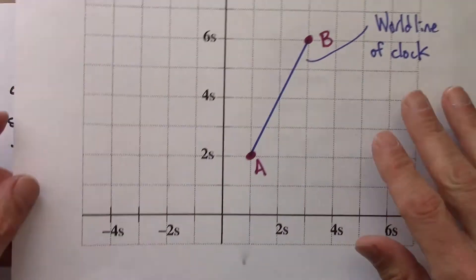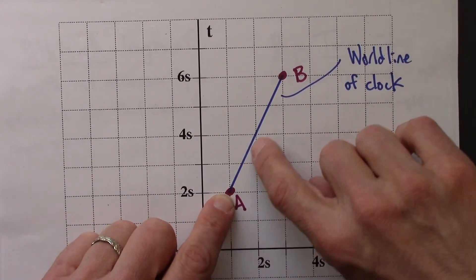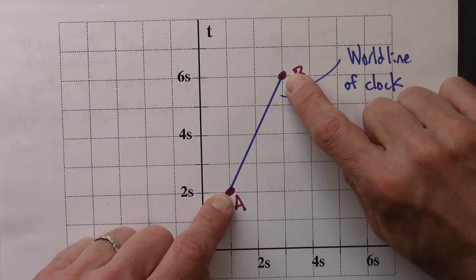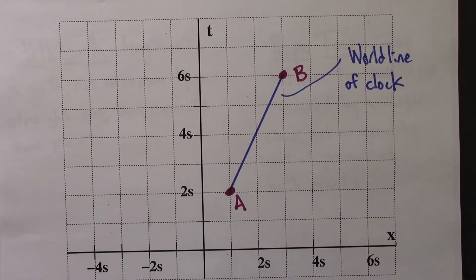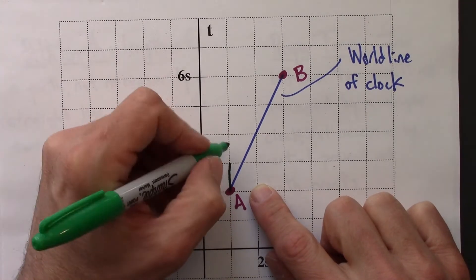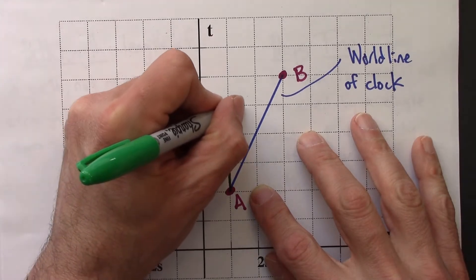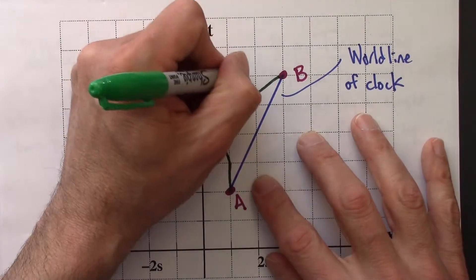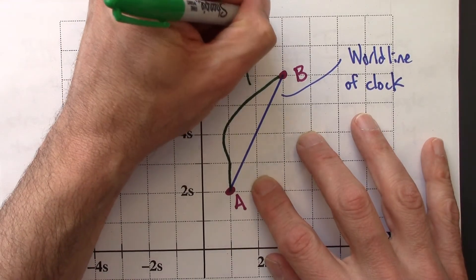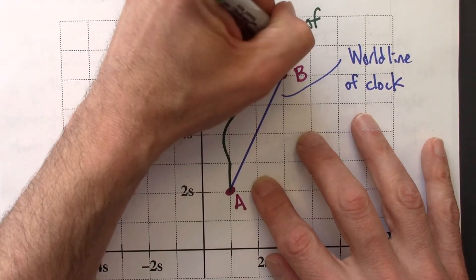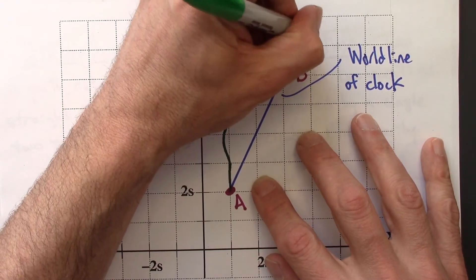What about in space-time? Alright, so this would be the world line of an inertial clock, moving at a constant velocity. We could have another clock that doesn't move at a constant velocity. Maybe it stays at rest for a little bit, and then goes to the left, and then ends up there. So this could be a world line of a non-inertial clock.